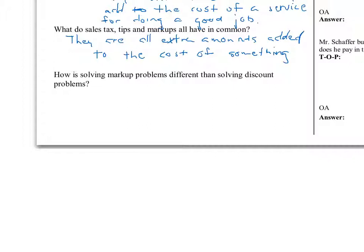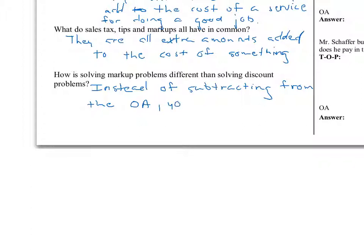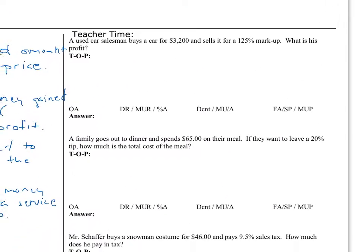Solving markup problems is different than solving discount problems. What's the difference? Mr. Matlock says: instead of subtracting from the original amount, you add to the original amount. Exactly. We're going to look at some problems. The first one says: a used car salesman buys a car for $3,200 and sells it for a 125% markup. What is his profit?